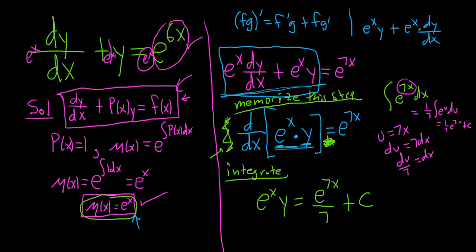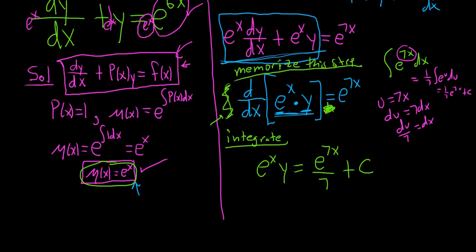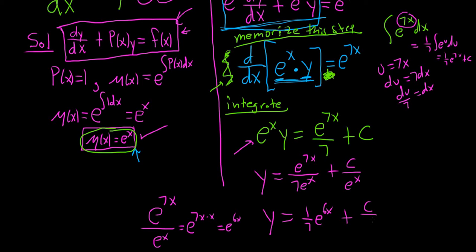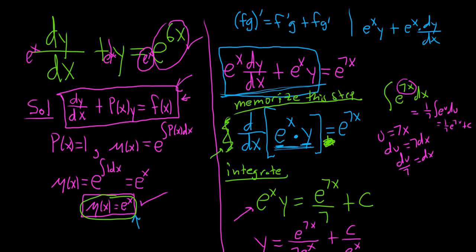Almost done. The last thing to do is divide everything by e to the x. Dividing the left side by e to the x gives y. On the right, e to the 7x over e to the x — you subtract exponents: 7x minus x equals 6x — so that term becomes (1/7) e to the 6x. The constant term becomes C over e to the x, or C·e to the negative x. So the full solution is y equals (1/7)e to the 6x plus C·e to the negative x.